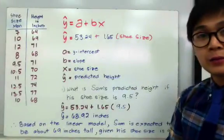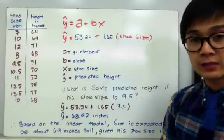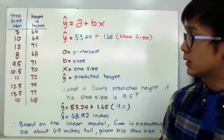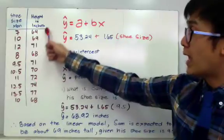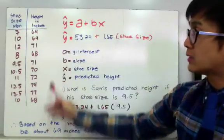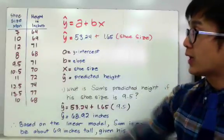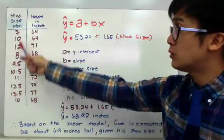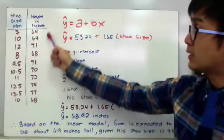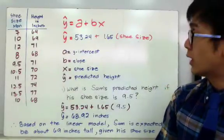In this particular example, we collected two quantitative data sets for the shoe size of men and their height in inches. We have 10 samples, and we're going to use these data sets wherein the shoe size of men will be our explanatory variable and the height in inches will be our response variable.